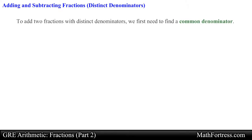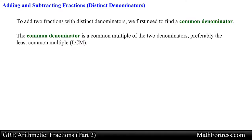To add two fractions with distinct denominators we first need to find a common denominator. This number is going to be a common multiple of the two denominators, preferably the least common multiple. For example, say we want to add the following fractions: two thirds plus three fourths.